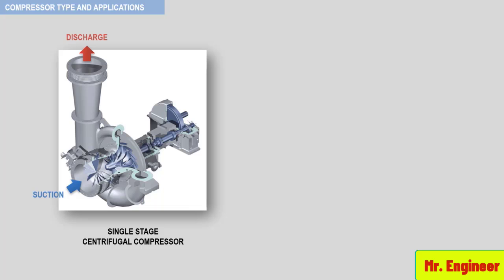Here you have the volute of the compressor, the inlet guide vane, the impeller and impeller eye, and finally the rotating shaft. For now, we just list the equipment and get to know their location. Then, in later videos, there will be a dedicated in-depth discussion covering each component individually.